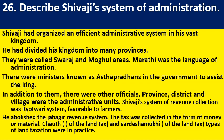Describe Shivaji's system of administration. Shivaji had organized an efficient administrative system in his vast kingdom. He had divided his kingdom into many provinces, called Swaraj and Mughal areas. Marathi was the language of communication and administration. There were ministers known as Ashtapradhans in the government to assist the king. Students need to write at least six points to score three out of three.